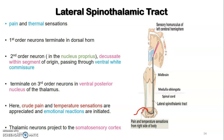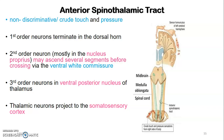The third-order neuron cell body is in the ventral posterior nucleus of the thalamus and carries information to the primary somatosensory cortex. After decussation, the second-order neuron ascends as the lateral spinothalamic tract in the spinal cord. Within the brainstem — medulla, pons, and midbrain — the lateral spinothalamic tract joins other tracts and is collectively called the spinal lemniscus. At the thalamus it projects to the ventral posterior nucleus, then onto the primary somatosensory cortex.